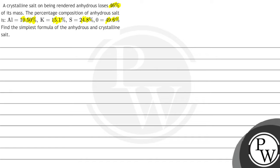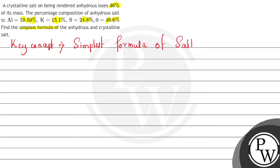Here we find the simplest formula of the anhydrous and crystalline salt. The key concept used here is the simplest formula of salt. The simplest formula of salt is the simplest whole number ratio of the atoms present in the compound. First of all, we have to find out the simplest formula for the anhydrous salt. The elements present are aluminum, potassium, sulfur, and oxygen, and the percentage composition is also given.